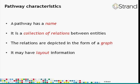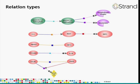So what do we mean by a pathway and what are its characteristics? Within the context of Avadis NGS, a pathway has a name and is a collection of relations between entities. These relations are depicted in the form of a graph. In addition, the pathway may or may not have layout information. Since the pathway is mainly a collection of relations, let's now take a look at the different relations that we can visualize within Avadis NGS pathway views.